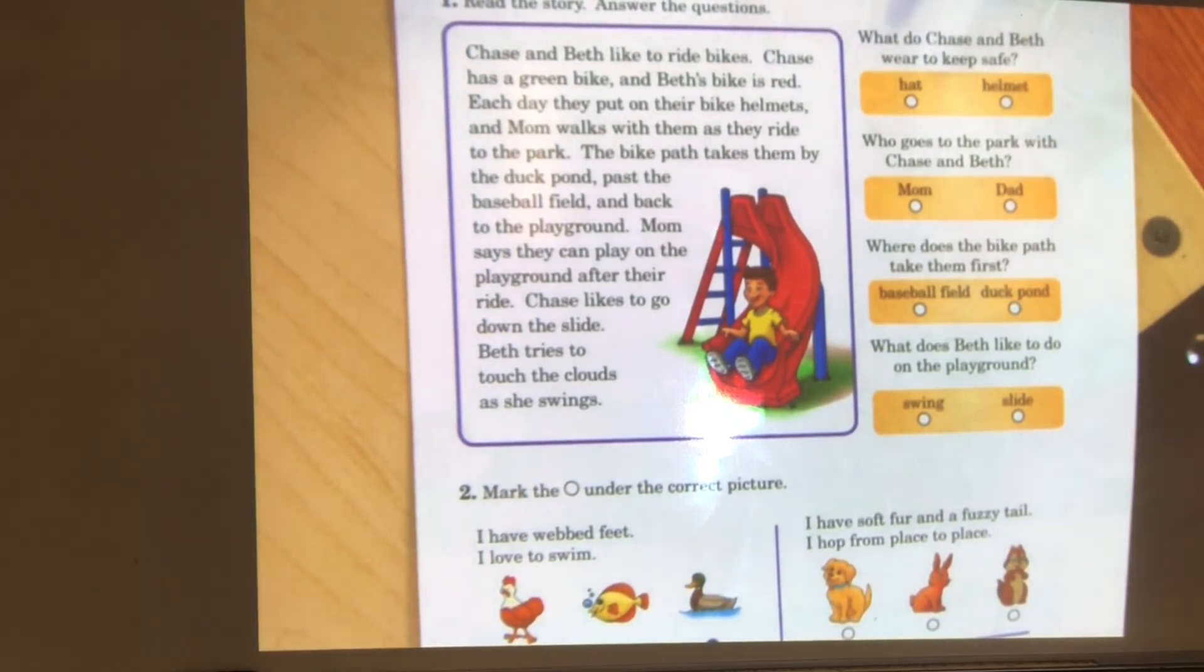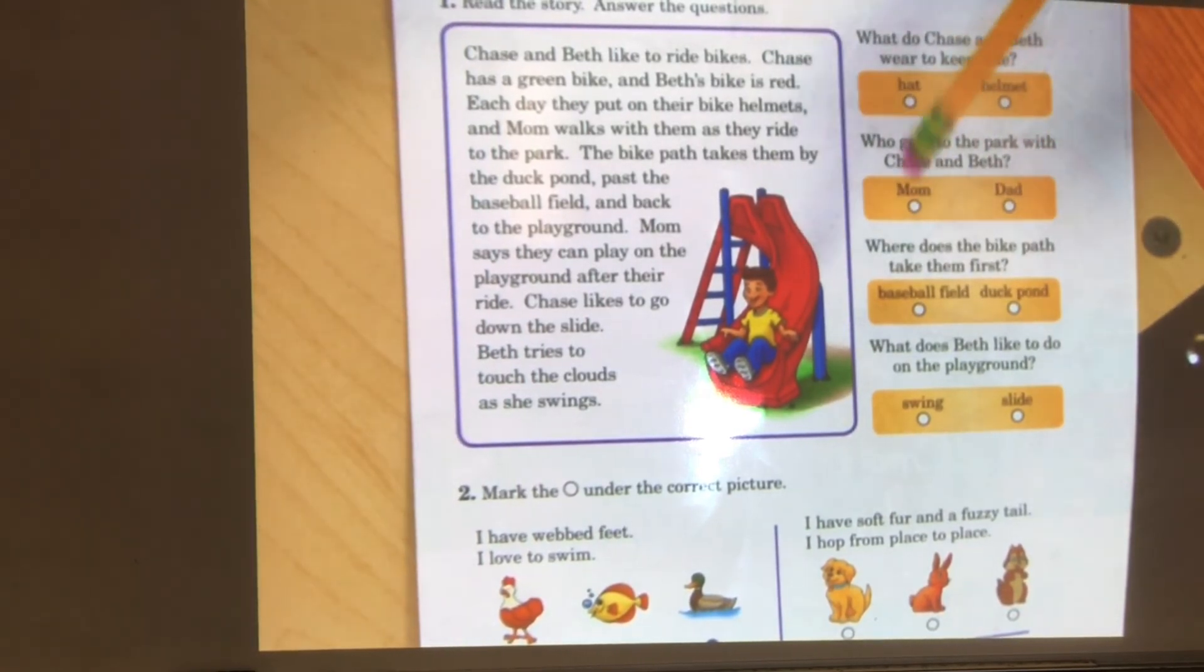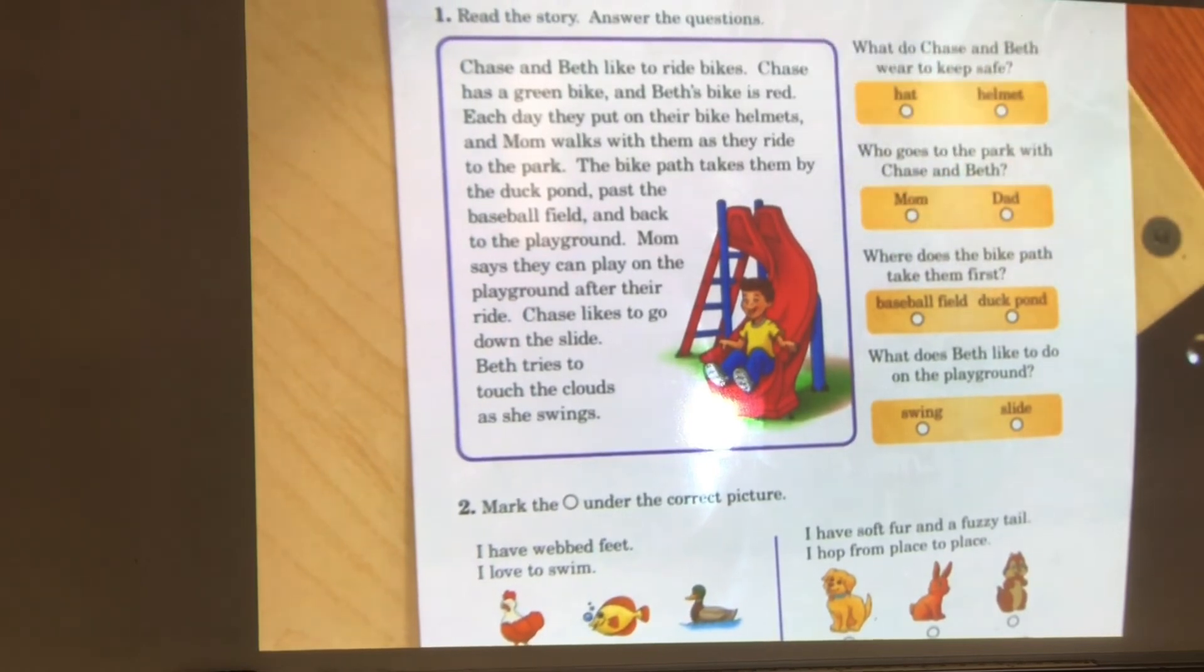The first one says, what do Chase and Beth wear to keep safe? A hat or a helmet. The next one, who goes to the park with Chase and Beth? Beth, mom or dad? Where does a bike path take them first? Baseball field or duck pond? What does Beth like to do on the playground? Swing or slide?